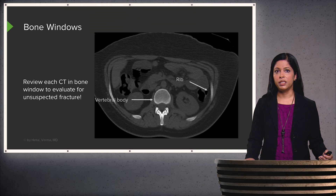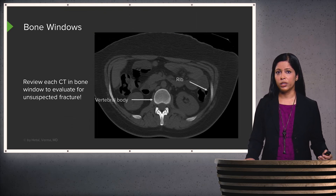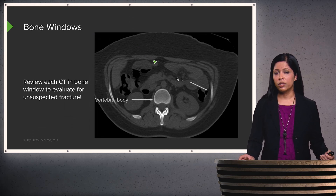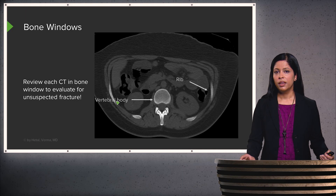Next, I take a look at the CT scan in bone windows and evaluate all of the different bony structures. Here you can see multiple ribs, the vertebral body, and the spinous process of the vertebral body.